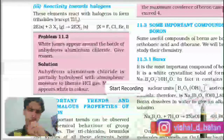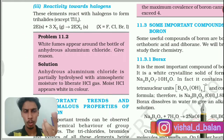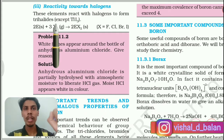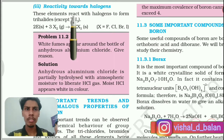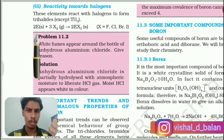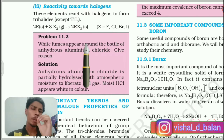Now the next paragraph is reactivity towards halogens. Halogens are fluorine, chlorine, bromine, and iodine. These elements react with halogens to form trihalides. The formula is E + X₂ → EX₃, where E is any group 13 element (boron, aluminum, gallium, indium, thallium) and X₂ is any halogen. They have given the example of thallium triiodide. But I have a little doubt here, because we already know thallium prefers the +1 oxidation state over +3.